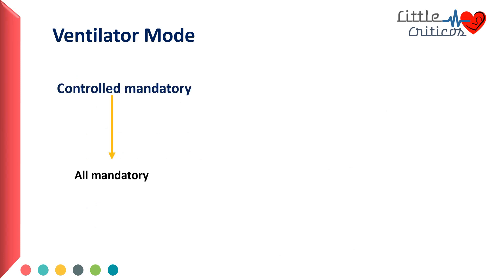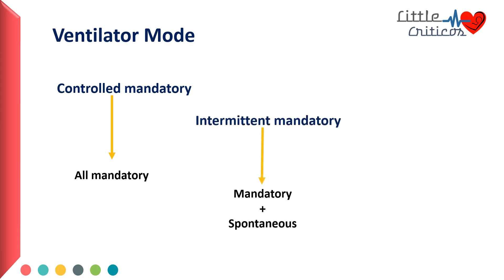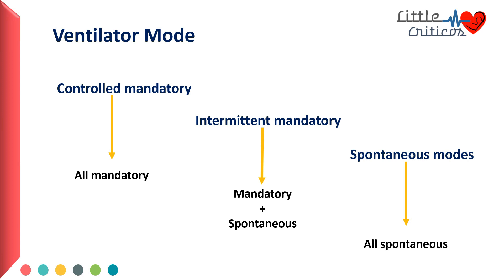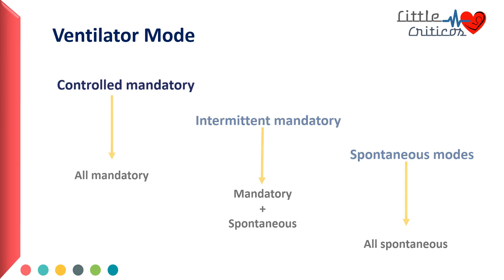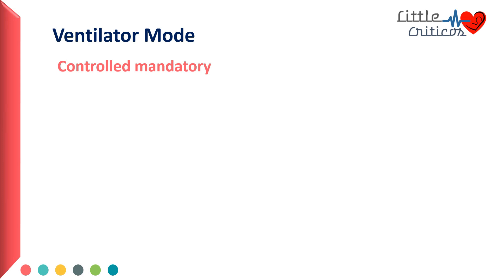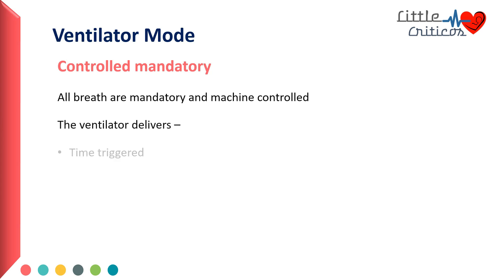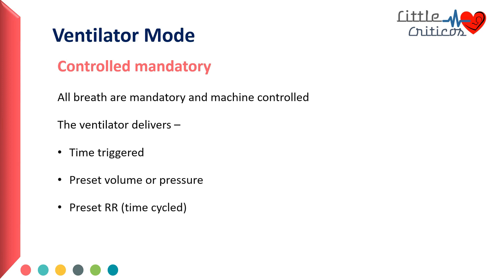In controlled mandatory mode of ventilation, all the breaths delivered are mandatory and the trigger, cycle, and limit are controlled by the ventilator. In intermittent mandatory mode, both machine-controlled mandatory breaths and patient-triggered spontaneous breaths are feasible. In spontaneous modes, all breaths are spontaneous and controlled by the patient. In controlled mandatory mode, all breaths are mandatory and machine controlled.